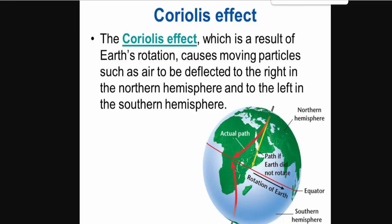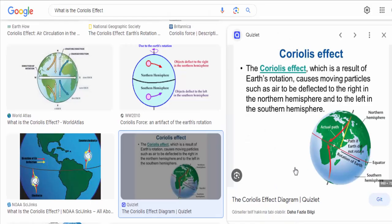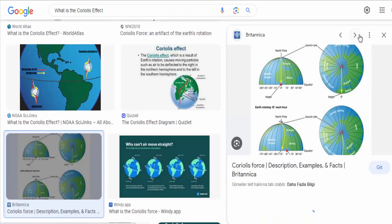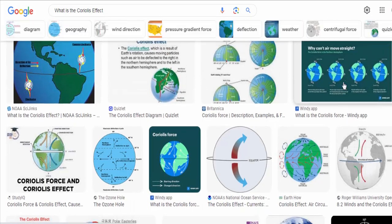In the Northern Hemisphere, the deflection is to the right of the moving object, while in the Southern Hemisphere, it is to the left. This deflection is known as the Coriolis effect.